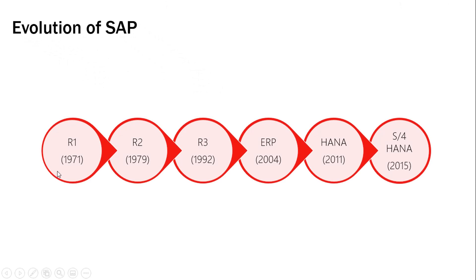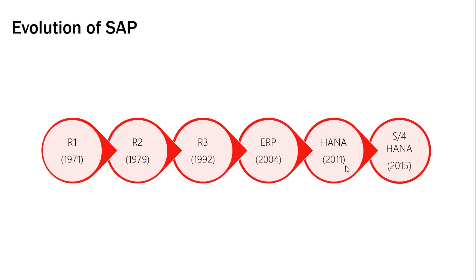This is the journey SAP has taken. They started in 1971 with their first product called R1. Then they launched R2 in 1979, and the most popular product was R3, launched in 1992, which was very successful. Then they launched ERP Netweaver in 2004. In 2011 they came up with something new — not their core expertise — and launched the HANA platform as a database. Till then all SAP products had access to various other databases like Oracle, DB2, etc.